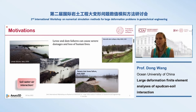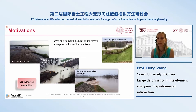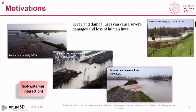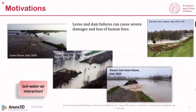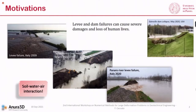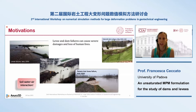There are several mechanisms that can lead to failure, such as overtopping, internal and external erosion, and global stability. Most of them involve soil-water-air interaction, so accounting for the unsaturated behavior of soil is crucial. In this presentation, I will focus on macro-instabilities due to changes in the pore-water pressure regime.